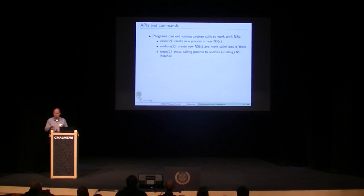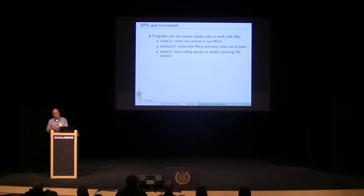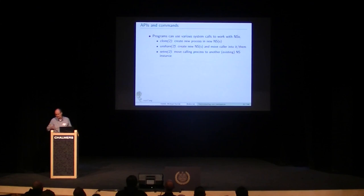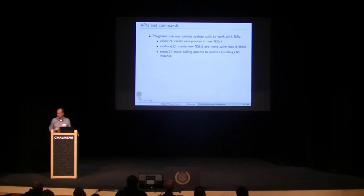There are some system calls that make all this work. The clone system call creates a new process and can simultaneously place it in new namespaces. Unshare creates new namespaces and moves the calling process into them — you specify what kinds of namespaces you want to create. SetNS allows a process to change its own namespace membership, moving into a different existing namespace.